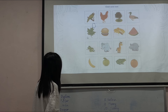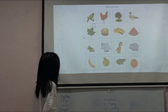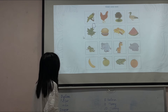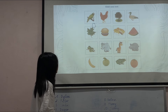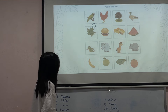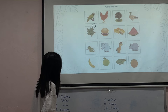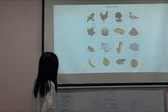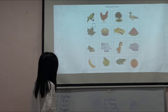Picture one is the odd one out because pictures two, three, and four are food, but picture one is a leaf.